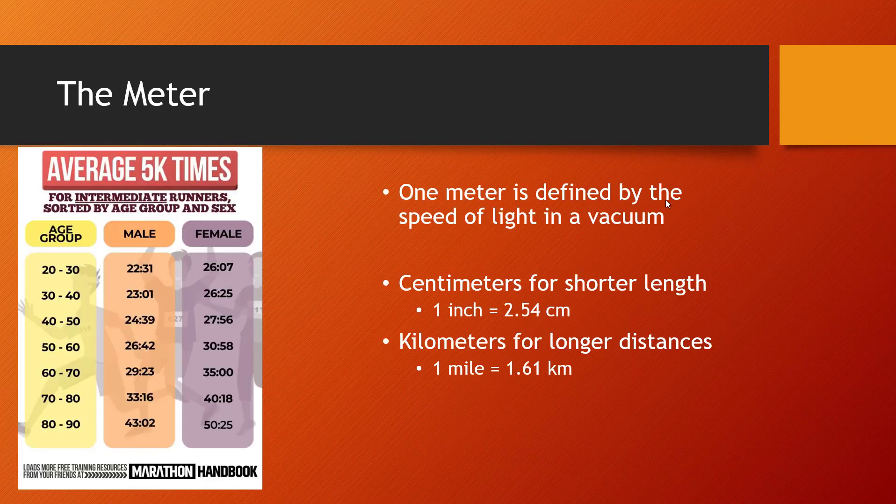First off, the meter. One meter is defined by the speed of light in a vacuum — there is a way of measuring how far light will travel in a given number of seconds in a vacuum, so not through a gas and not through a liquid. And we use this in the five kilometer run, using 5,000 meters.